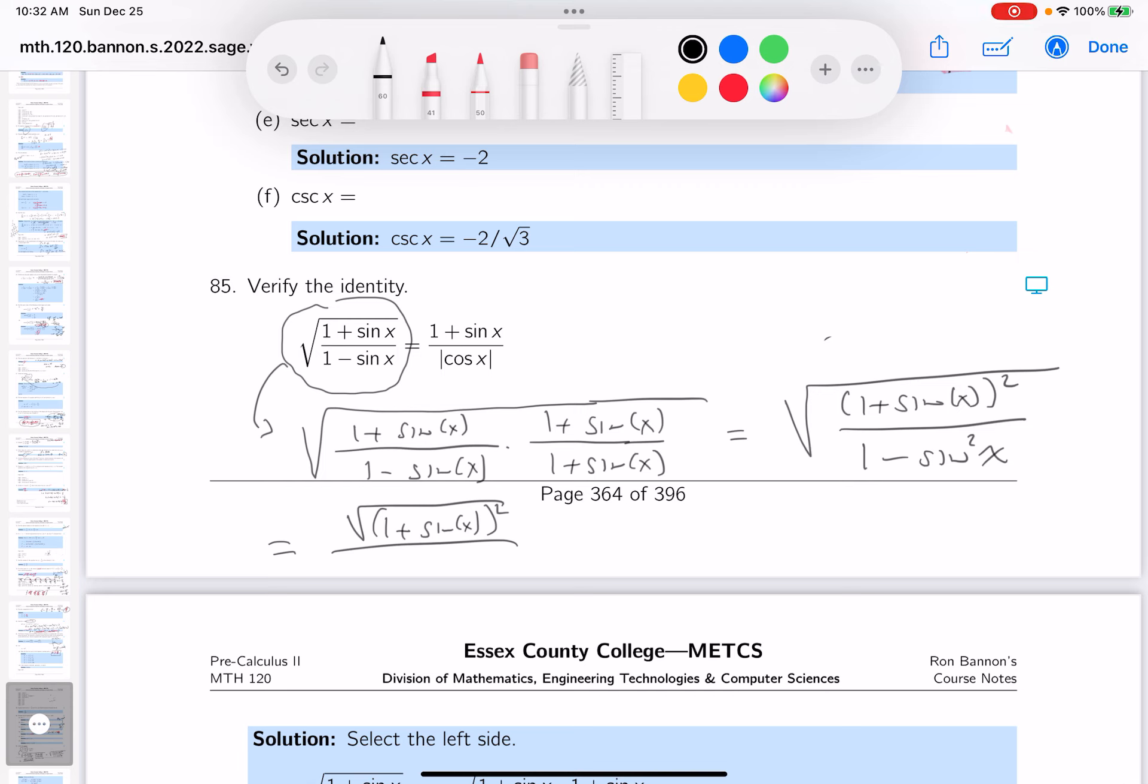And the bottom is the square root of—well, 1 minus sine squared x is just simply cosine squared x.